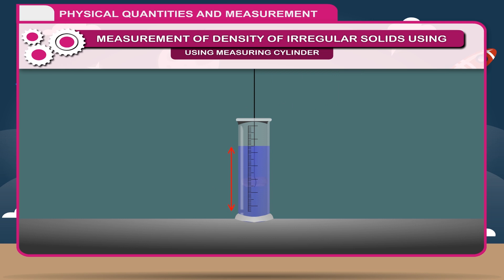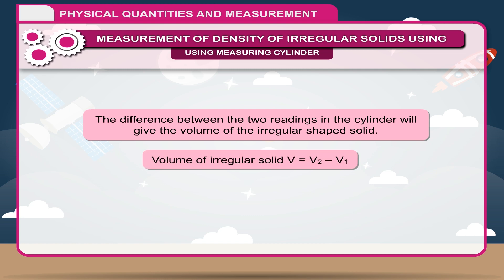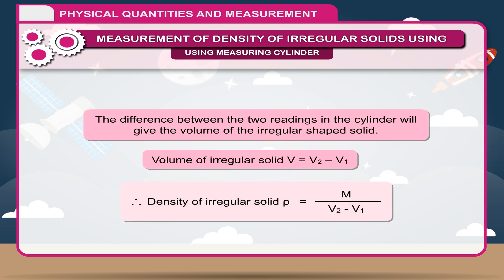The level of water in the measuring cylinder rises up. Note the new level of water in the cylinder again. Let it be V2. The difference between the two readings in the cylinder will give the volume of the irregular shaped solid. That is, volume of irregular solid V is equal to V2 minus V1. Density of irregular solid is equal to M divided by V2 minus V1.